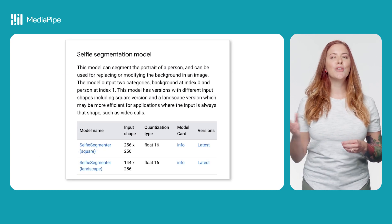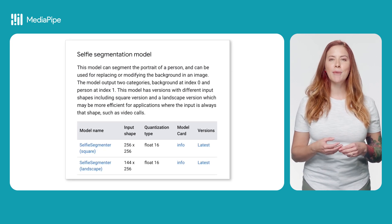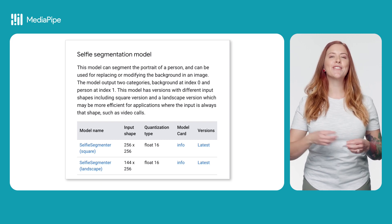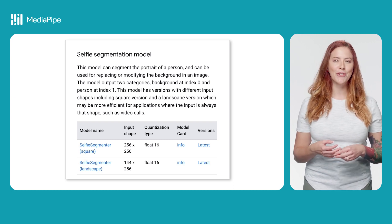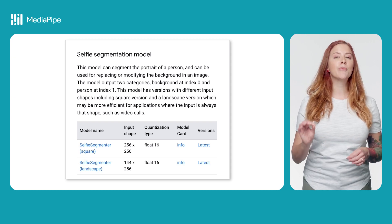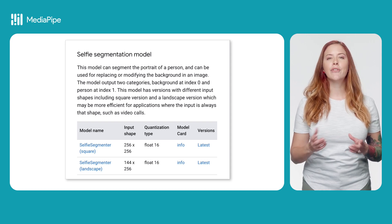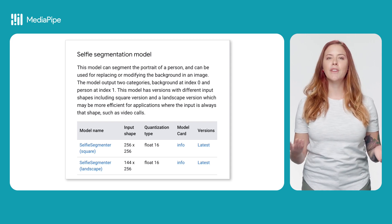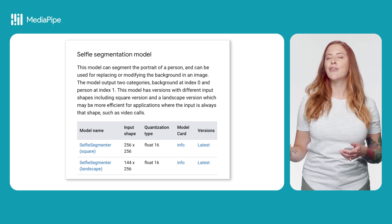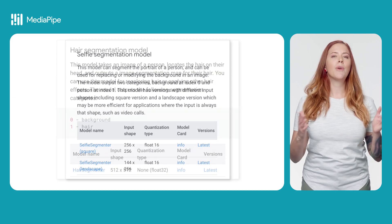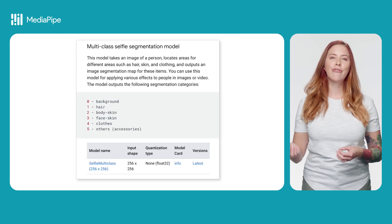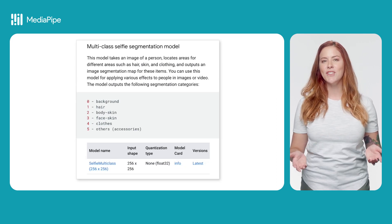To get started using the Image Segmentation task for the web, it's a good idea to first take a look at the available segmentation models. The task includes several models specifically trained for segmenting people and their features within image data, including a person and the background, a person's hair only, and a person's hair, face, skin, clothing, and accessories.